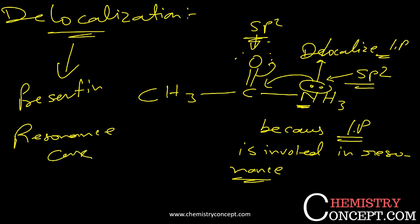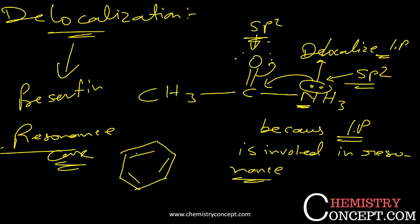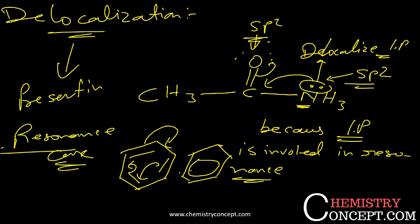Whenever we have resonance, there will be delocalization of electrons. Suppose we have a benzene molecule, and we have these pi bonds — what is going to happen is these pi bonds can be here or here. Overall, we can write it like this, showing that the electron is delocalizing over the entire C6 ring, so this electron is delocalized. This means the electron is participating and contributing to each and every atom in the molecule.